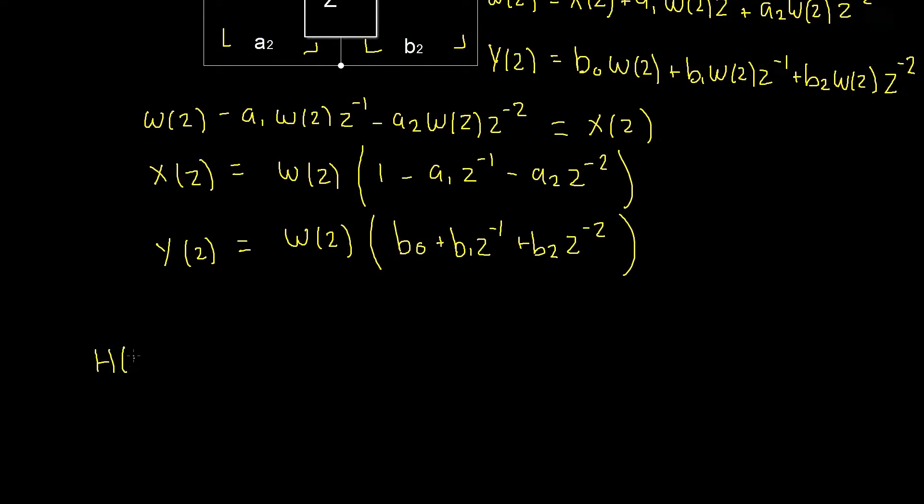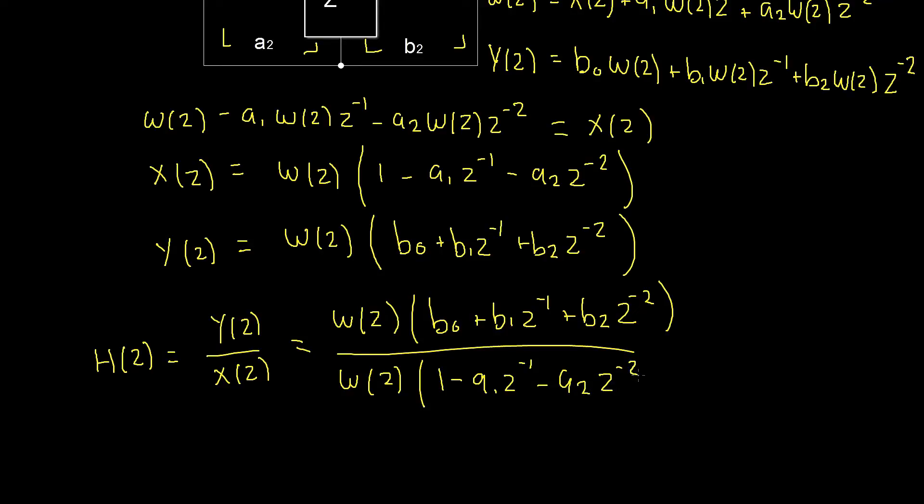h of z is equal to y of z divided by x of z, and that's equal to our w of z... I'm sorry that these look like twos, some of these, hopefully following along nicely... and then all of that multiplied by b0 plus b1 z to the power of negative 1 plus b2 z to the power of negative 2, and then all of that is divided by w of z times 1 minus a1 z to the power of negative 1 minus a2 z to the power of negative 2. We can see here our w of z's cancel, and we're left with simple scales and shifts of the input and output signal.